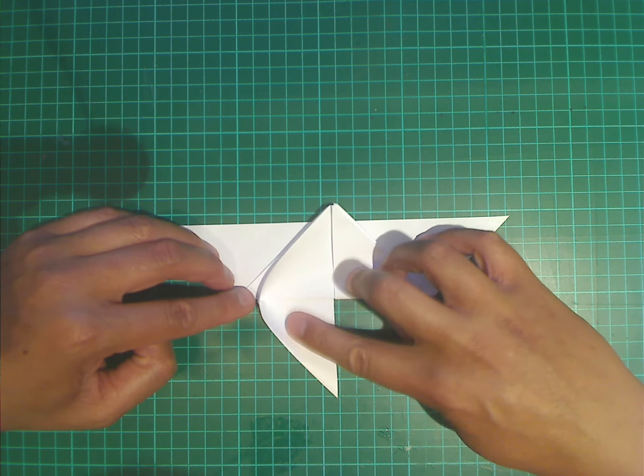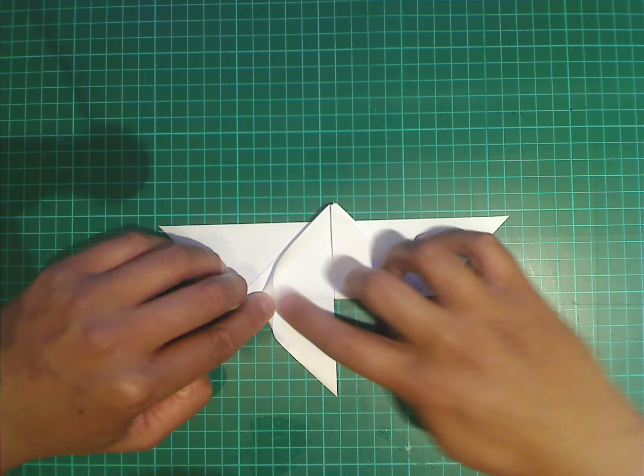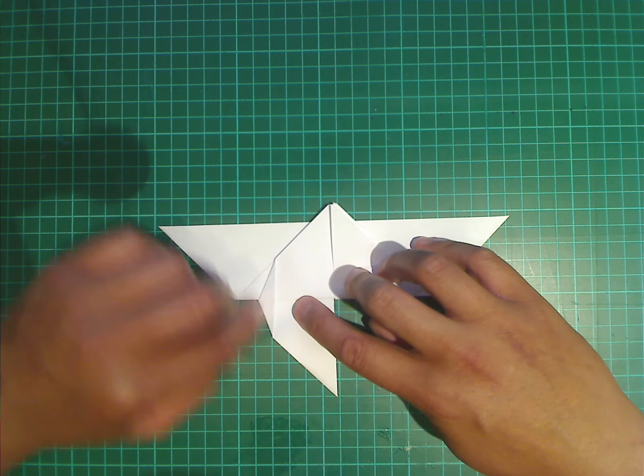And as you see that curl up, you're going to push it down flat. And it will form a kind of triangle-shaped pair. And again, it doesn't have to be accurate for this type of model, for this model.